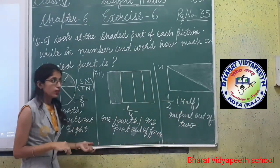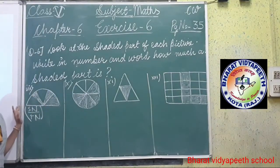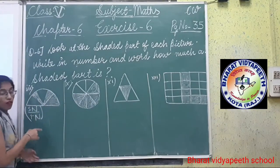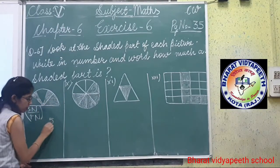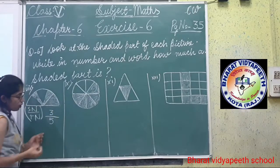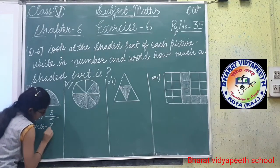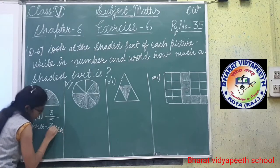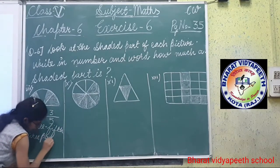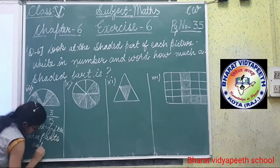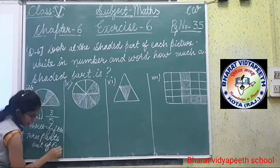Now see the next one, children. We have done the fifth number. Now see the seventh number. Total number of parts: 1, 2, 3, 4, 5. Shaded part: 3. Now how can we write? 3 over 5. Second formula: 3 parts out of 5. Clear?